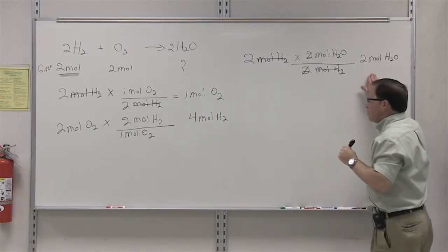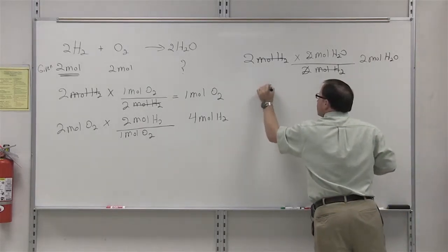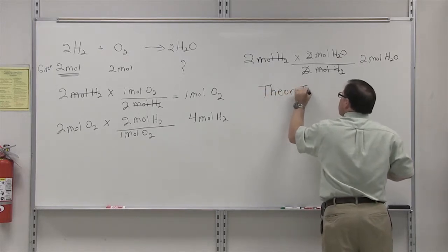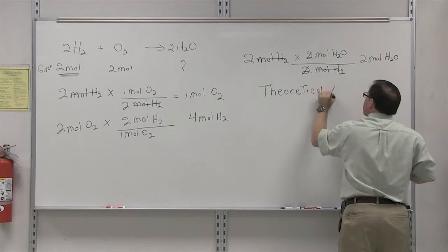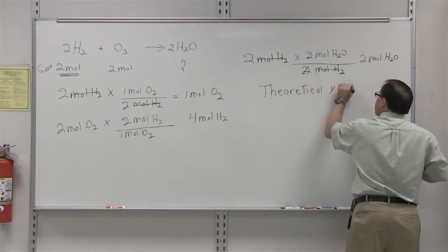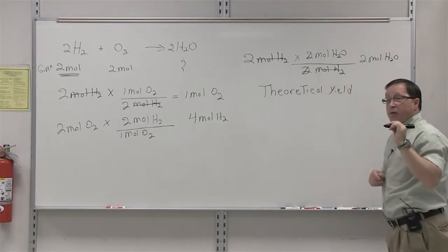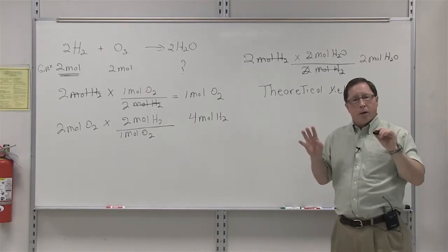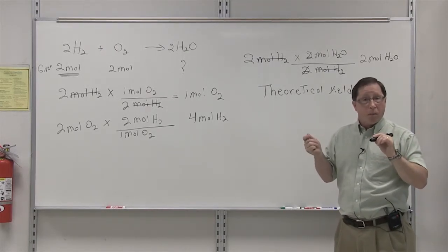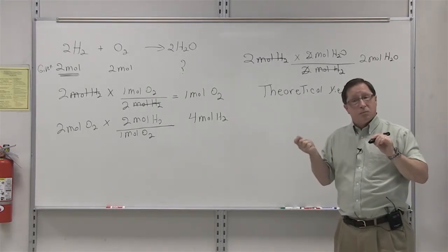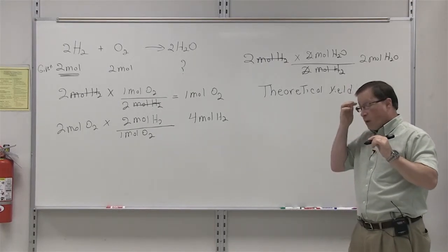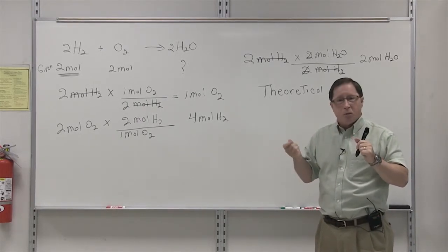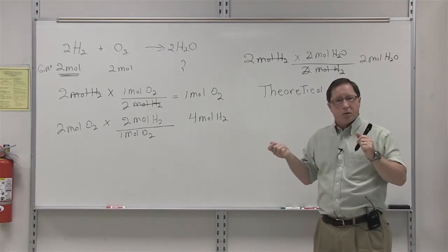This value, two moles of water, is known as the theoretical yield. Theoretical yield, in other words, tells you the maximum quantity of product that you can form from your limiting reagent. It's like if you bake cookies and the recipe calls for thirty-six cookies. Theoretically, you should only be able to make thirty-six cookies.